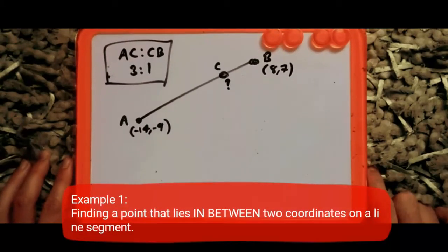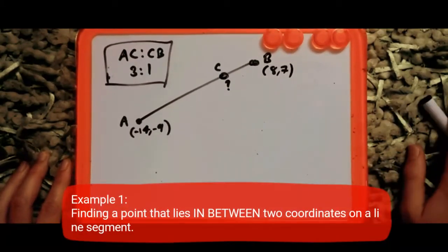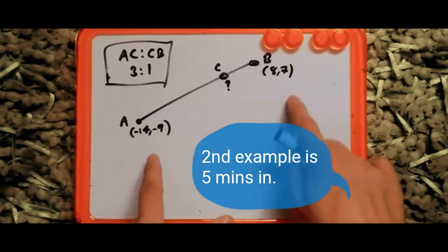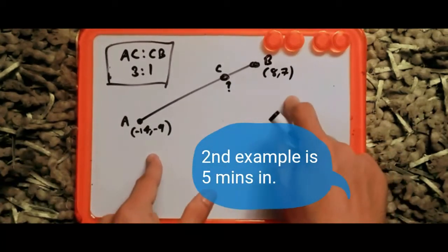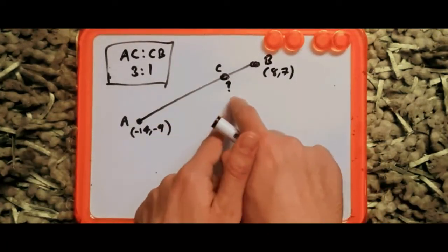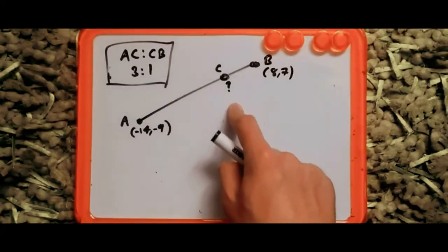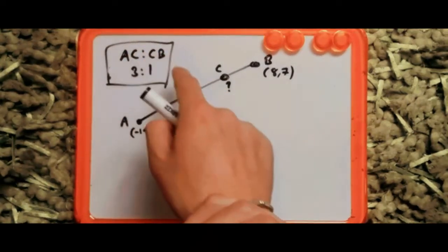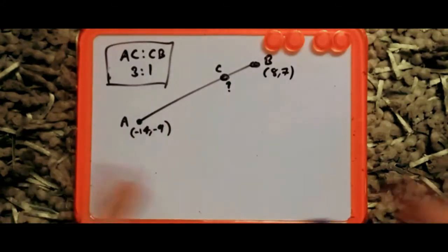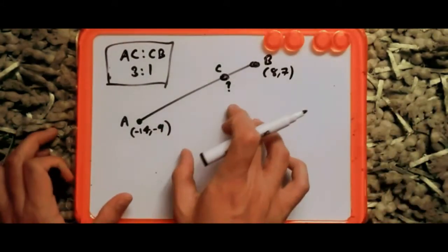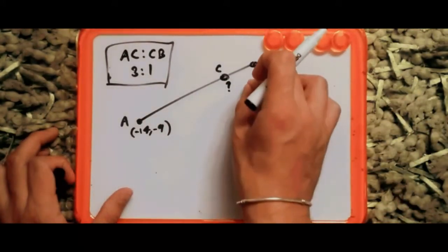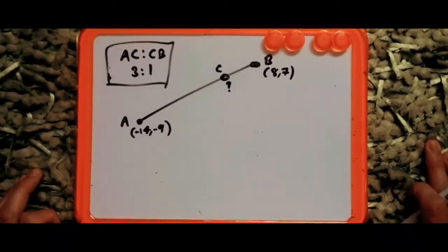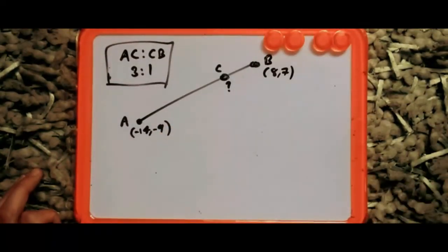Hey guys, welcome back to another video. In this one we'll be looking at coordinates and ratios, and using two points on a line segment to find the value of coordinates somewhere that lies on the line. We're given that AC to CB is 3 to 1, which means the length AC is three times bigger than CB.